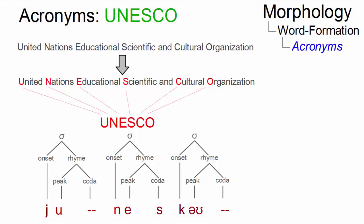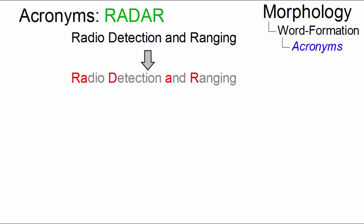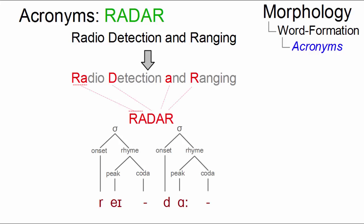Note that the formation of acronyms is neither restricted to the initial letters of the items of the underlying expression nor to its content words, as shown for example in RADAR. Here, the first two letters from the first term and the initial letters from the remaining words are combined and build two well-formed syllables.